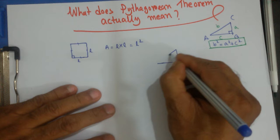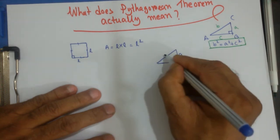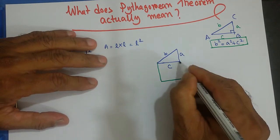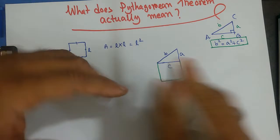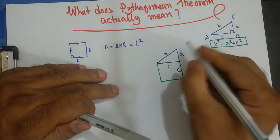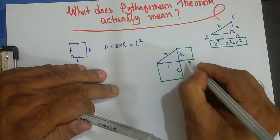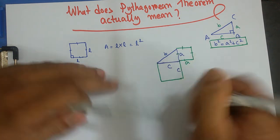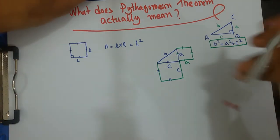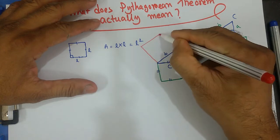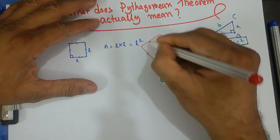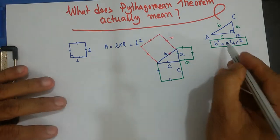Let's say this side is A, this side is B, and this side is C. If I draw a square of length C on that side, and another square with side A — all sides equal — and then for B, there is another square with all sides equal.